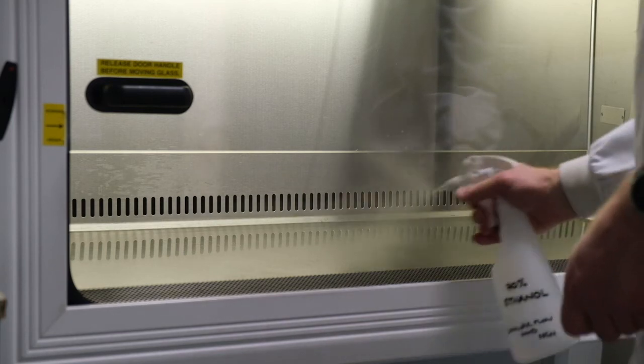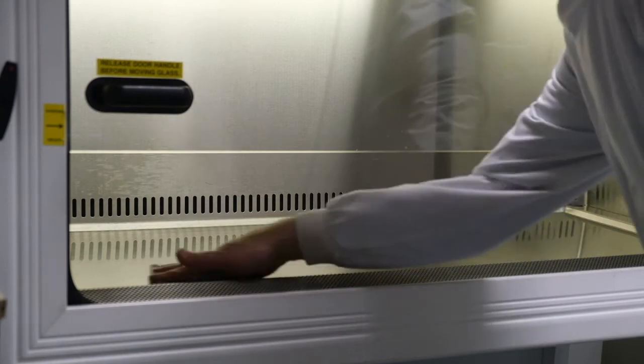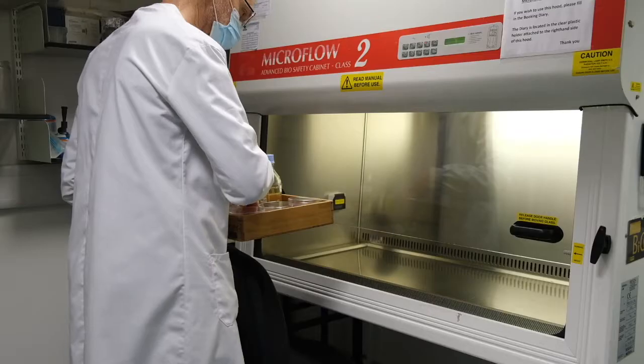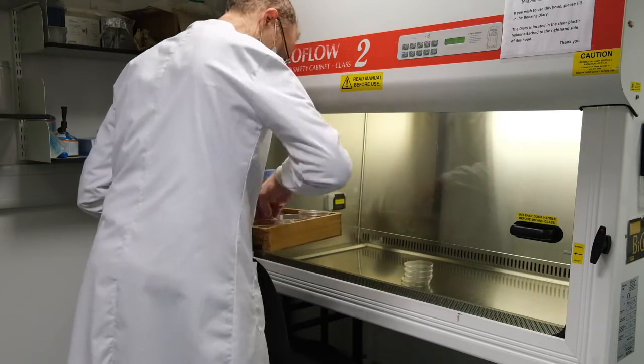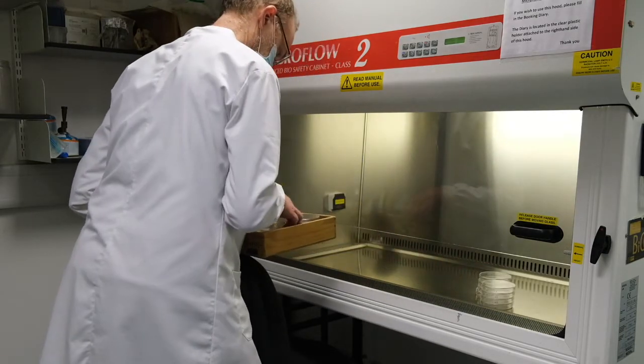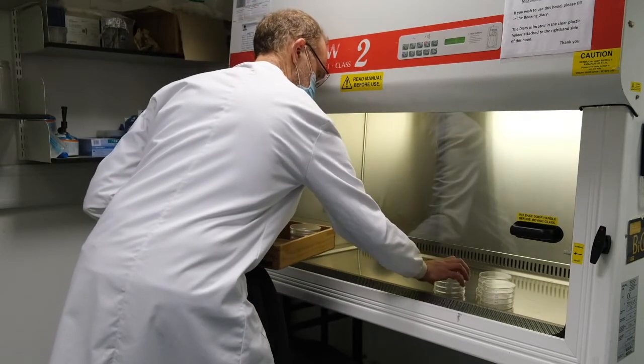Before use, we ensure that the hood is sterile by wiping down with 70% ethanol. We can now place our labelled petri dishes and our molten agar in the flow hood, ready to pour our plates.